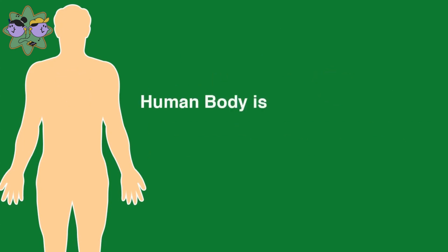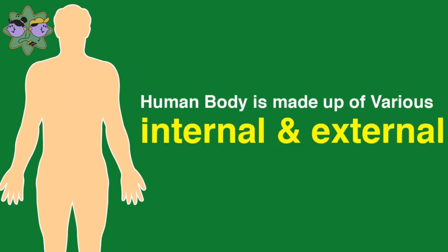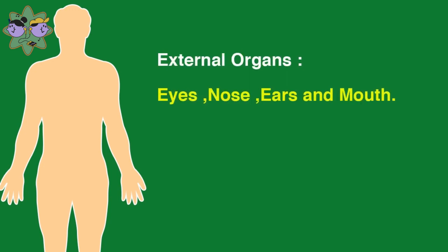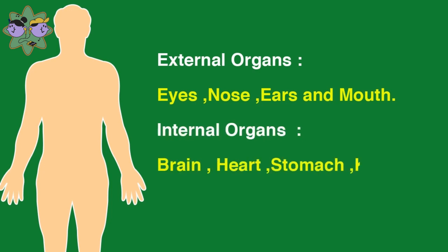The human body is made up of various internal and external organs. External organs: eye, nose, ear, and mouth. Internal organs: brain, heart, stomach, kidney, lungs, liver.